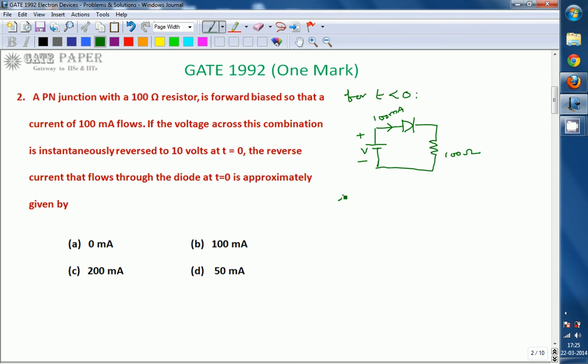Now for T equals 0, the value across that one is going to be suddenly reversed. And this is the resistor and the voltage across this one is suddenly reversed to minus 10 volts.